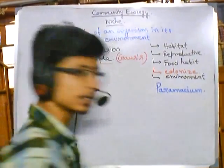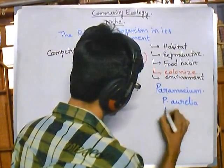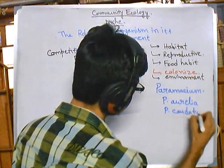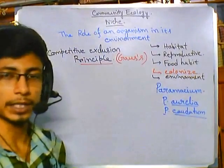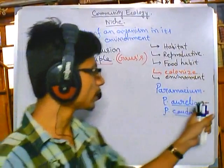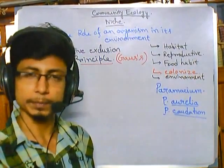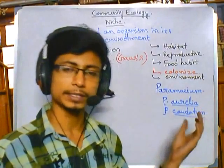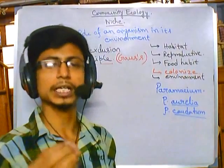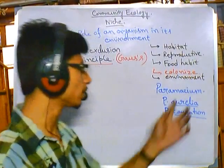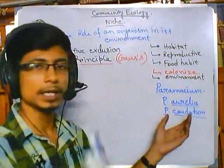The two species used were Paramecium aurelia and Paramecium caudatum. Both of them feed on similar types of prey. Their energy requirements, requirement for sunlight, oxygen, dissolved oxygen, and water are all similar. So ideally, they share the same type of habitat.